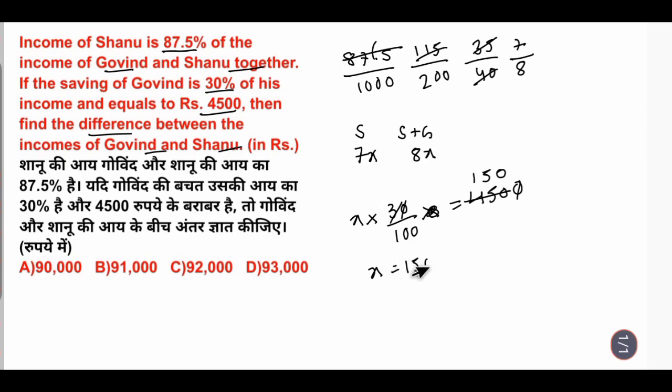From this we get X equals 15000. The difference between both - Govind's income is X, so the difference between 7X and X is 6X.